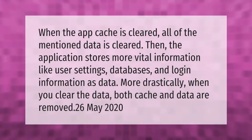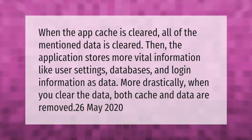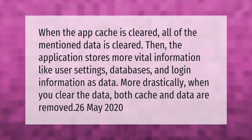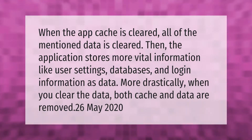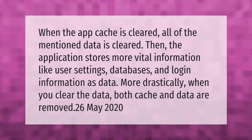When the app cache is cleared, all of the mentioned data is cleared. The application then stores more vital information like user settings, databases, and login information as data. More drastically, when you clear the data, both cache and data are removed.